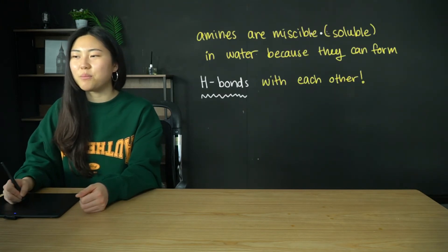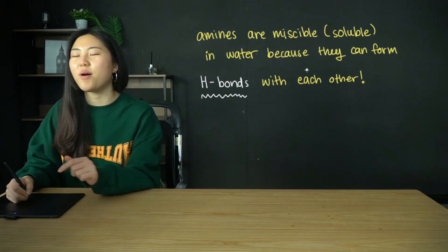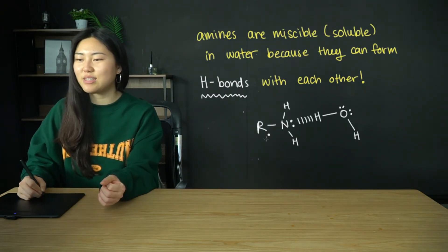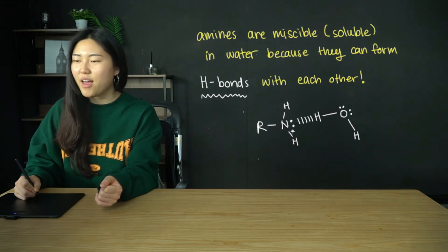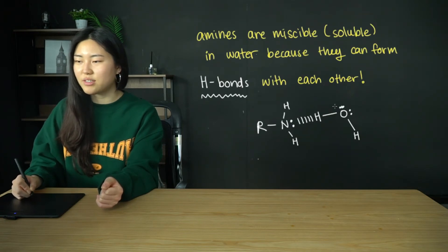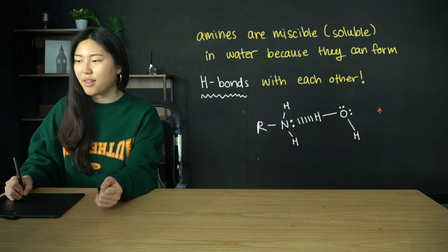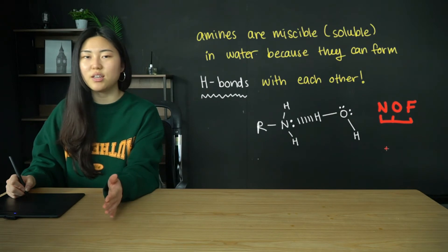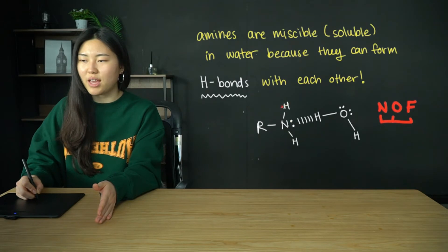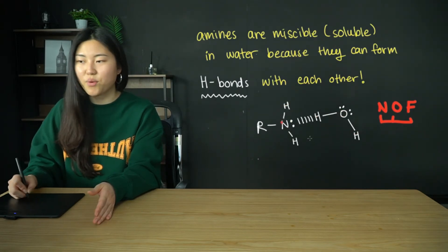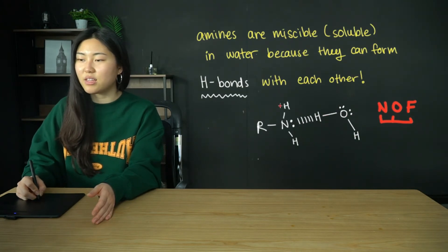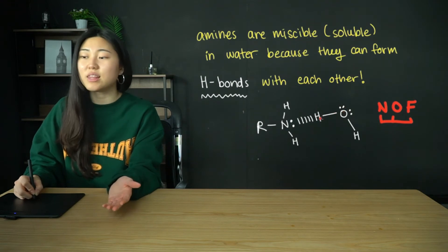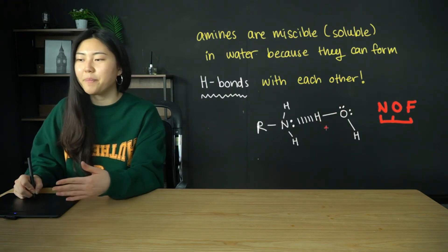Amines are miscible in water, meaning they are soluble in water because they can form hydrogen bonds with water molecules. The amine group has a lone pair, and N, O, and F are the elements that must be bonded to hydrogen for hydrogen bonding to form. The N bonded to H is partially positive enough, and N is partially negative enough, while the O and H in water are sufficiently polarised to form hydrogen bonding between amines and water.